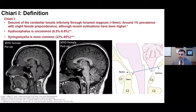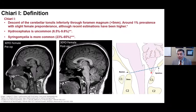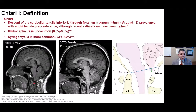Chiari 1 malformation is defined as a descent of the cerebellum below 5 millimeters from McRae's line — the line from basion to opisthion on the occipital bone. Greater than 5 millimeters of cerebellar descent can trigger a Chiari diagnosis. Hydrocephalus is somewhat uncommon, though it does happen, while syringomyelia is a little more common. The individual shown here had a syrinx inside the spinal cord, which resolved after an operation.